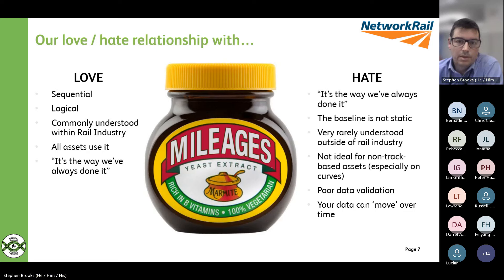Obviously, if you've got a love side of this, there's going to be a hate side of it. One of the biggest things is it's the way we've always done it. That's not necessarily a reason to keep it. The baseline or the reference that is used for linear referencing is not static. Linear referencing is very rarely used outside of the railway industry. Talking with emergency services, for example, they often require us to use things like what three words or coordinates to define the location. They won't understand the nuances of the mileage. It's not ideal for off-track based assets, especially on a curve. And it's very difficult to validate your data just using ELR and mileage. Your data can potentially move over a period of time or appear to move over a period of time without you changing any of your data.